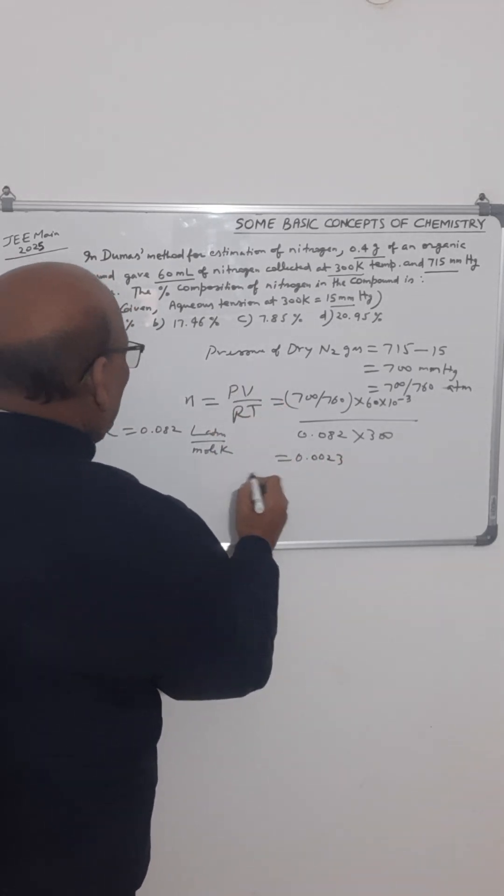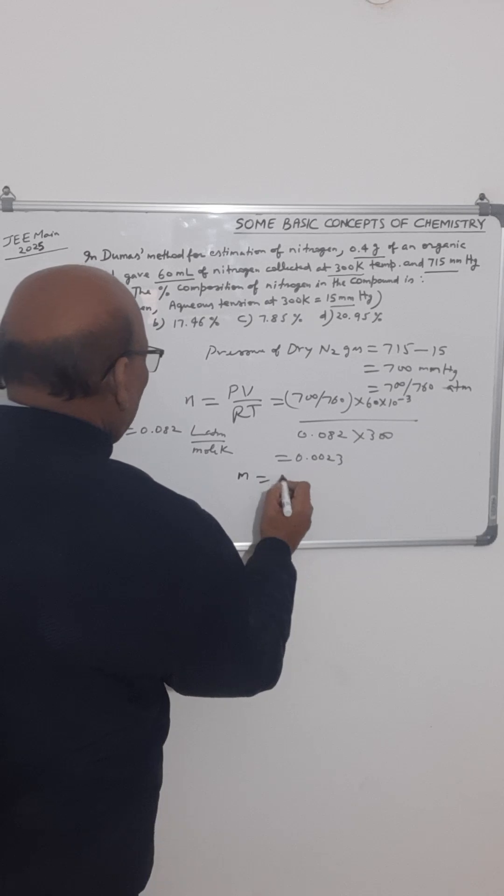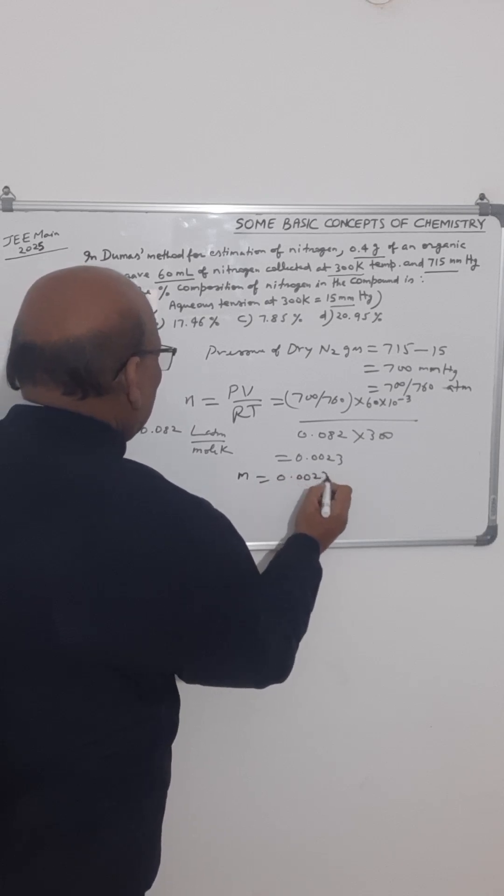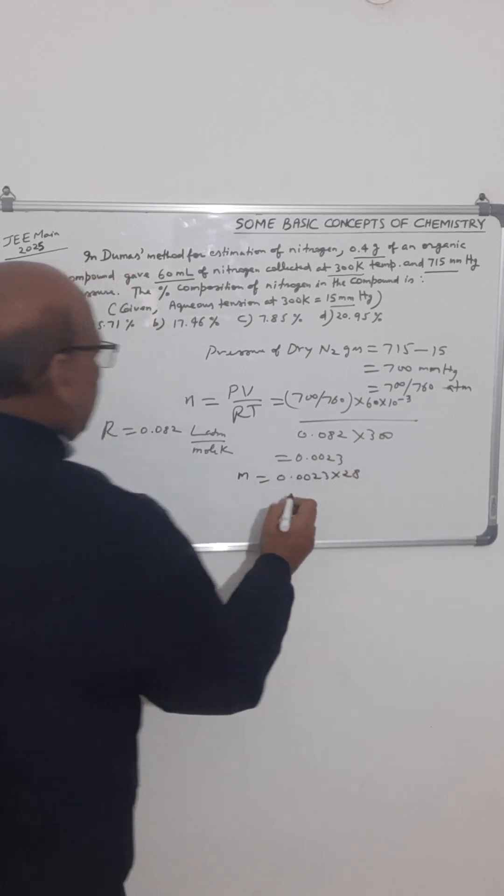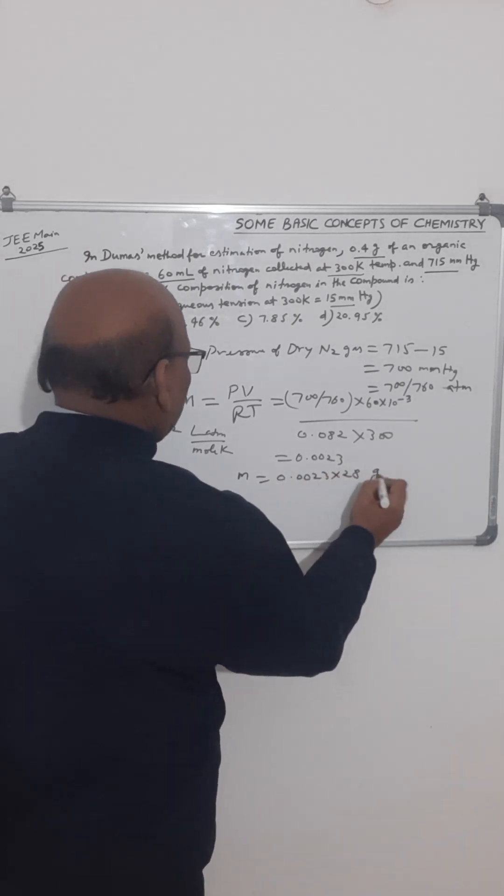Now the mass of nitrogen will be number of moles multiplied by its molar mass. That is 0.0023 multiplied by 28. This will be the mass of nitrogen collected in grams.